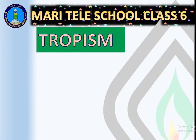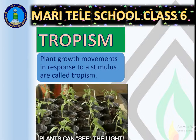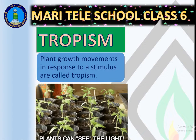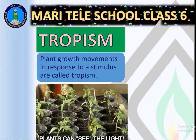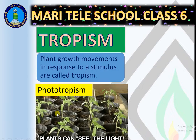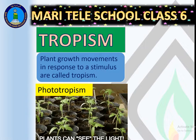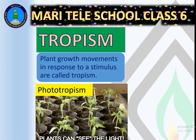Next is tropism — the growth movements of plants in response to a stimulus. A stimulus is any change in the environment, like light or water. If you look at this plant, the stem and leaves are moving towards the light. Sunflowers also move like this — this is called phototropism. All such plant growth movements in response to a stimulus are called tropism.